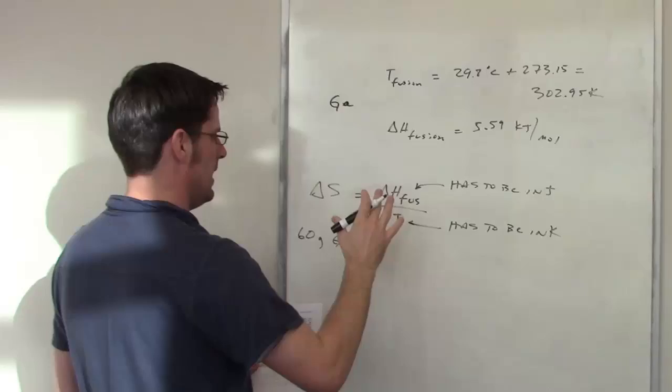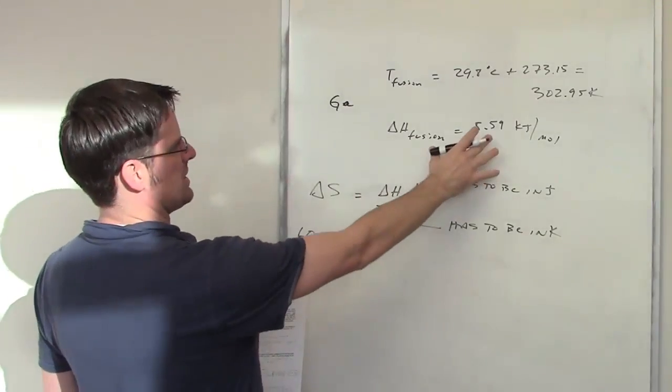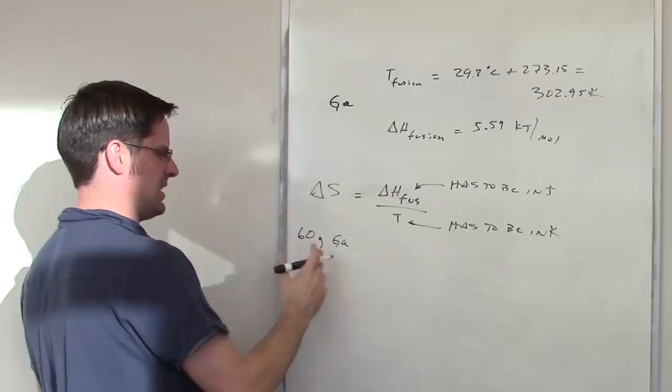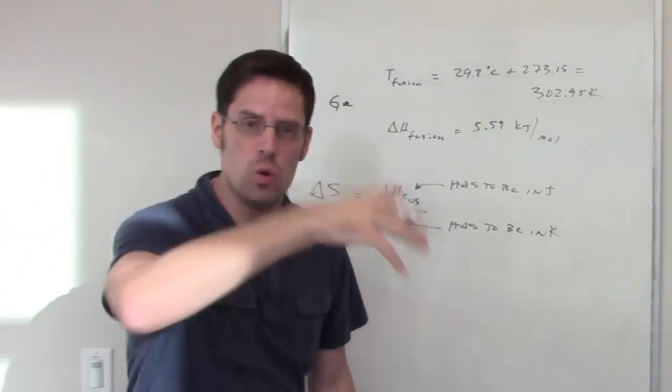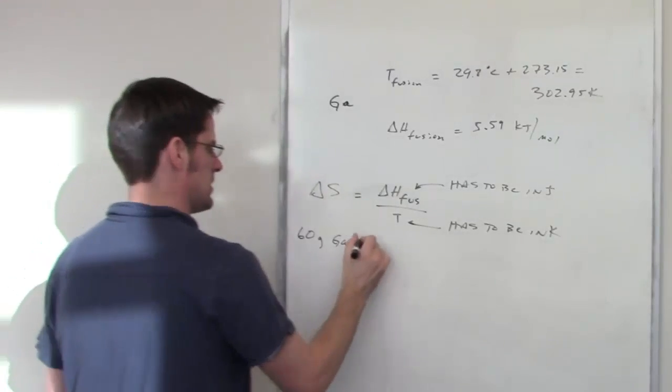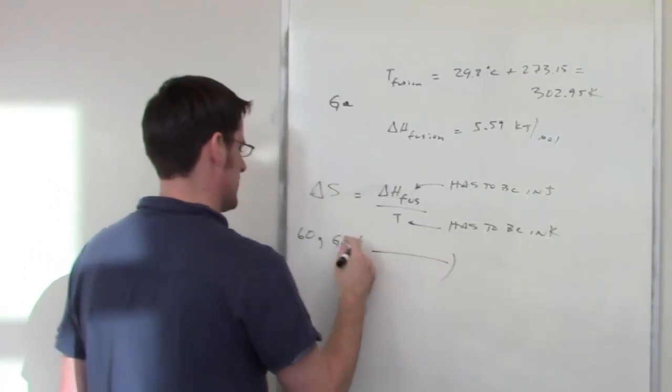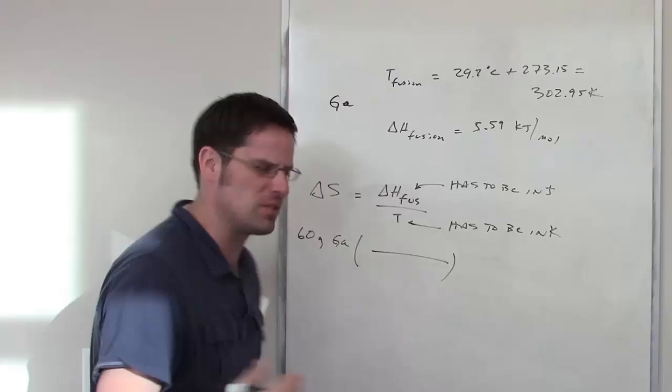Now I need to take this number and this amount, 60 grams, and somehow do something to it to get joules out. So let's take our 60 grams, and we'll remember that there's some kind of atomic weight of gallium.